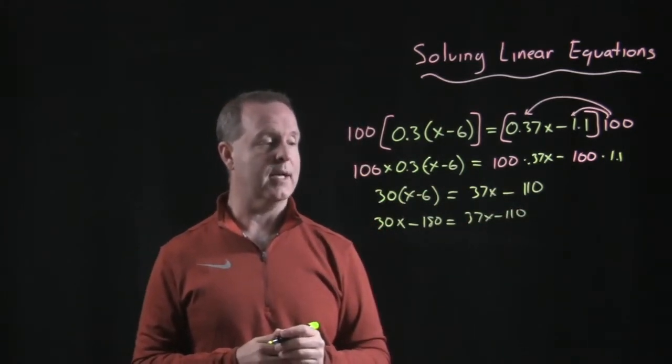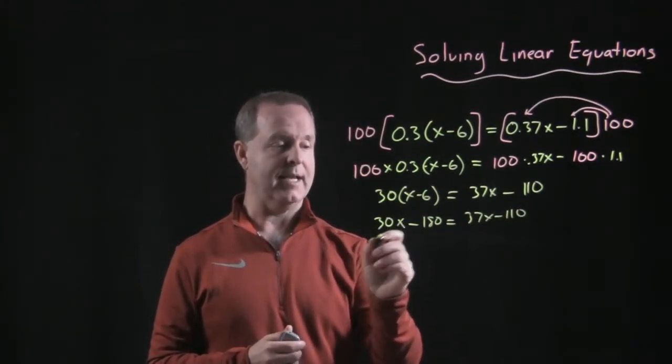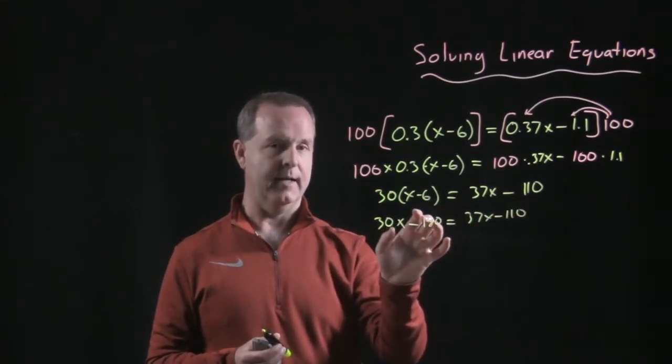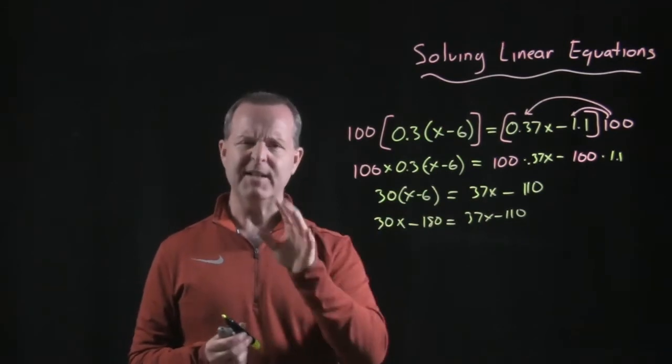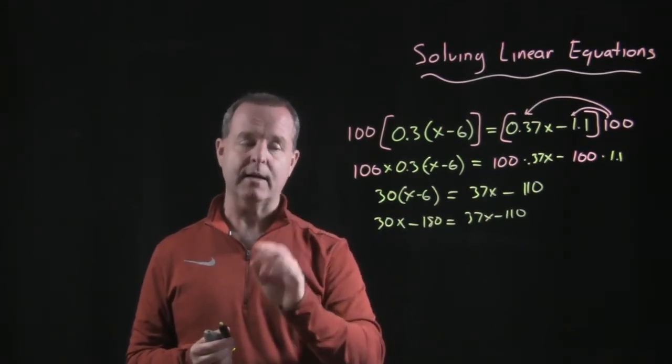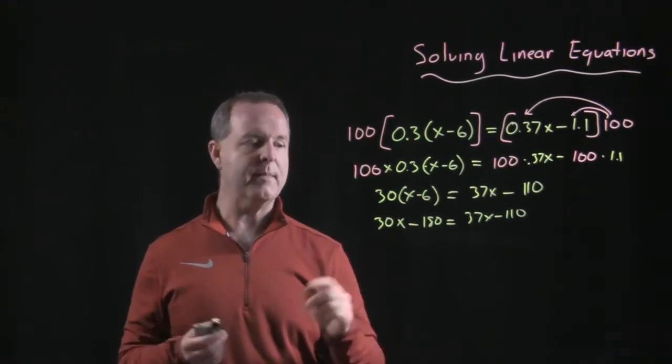Collect my variables on one side, so let's subtract negative 30 from this side, and let's add 110 from this side. Some of you guys might be going, well Willie, can't we just do both at the same time? We can if we're very clear what's happening. So here's what I mean by that.